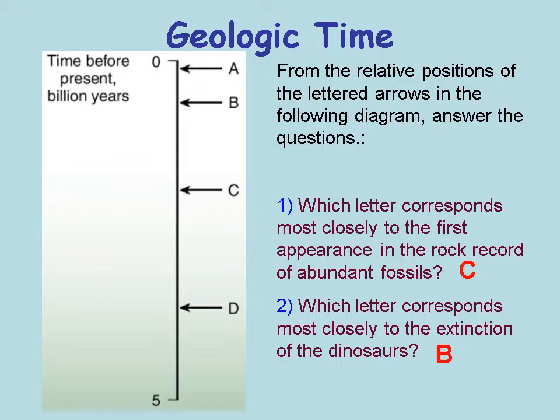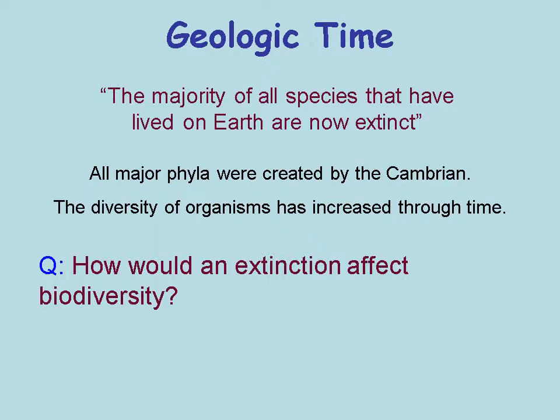Letter A might apply to something like the creation of mastodons or mammoths. One interesting thing to think about is that even though all major phyla were created by the Cambrian, most all species on Earth have gone extinct, and God has created new species over time. The diversity of organisms has increased through time, so we have many more species now than we did earlier in Earth history.